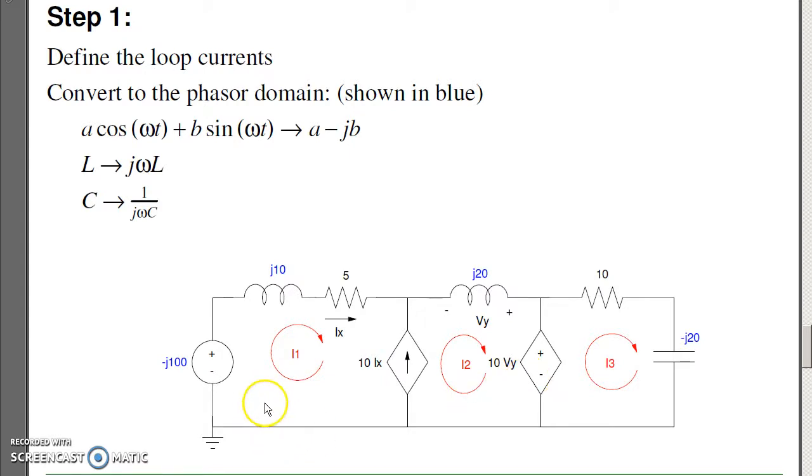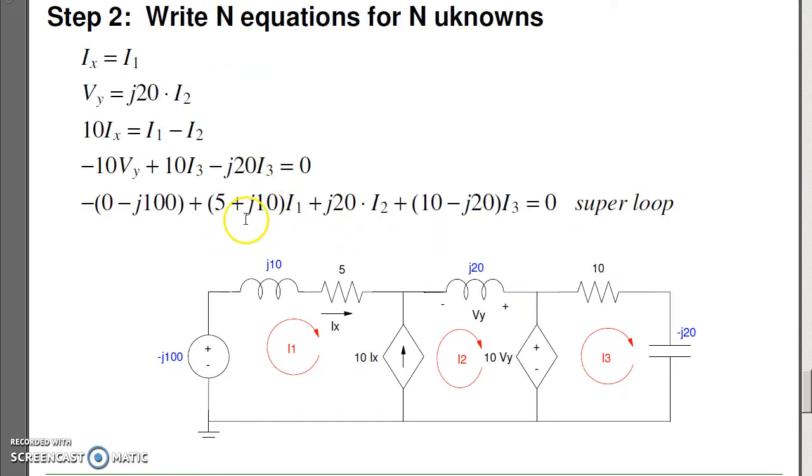I can now start writing the loop equations. When I write the loop equations, I start with the dependent source. Ix is I1. Vy is the impedance, -j20 times I2. This current says that I2 - I1 = 10Ix, and I need two more equations. I can't write the loop equation around I1 because I don't know this guy. I can't write I2. I can write the loop equation around I3.